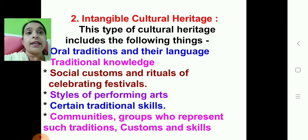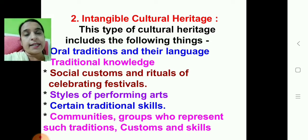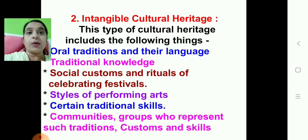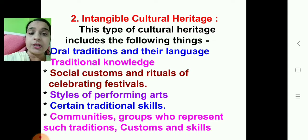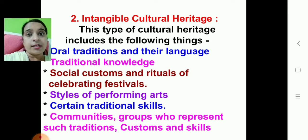Next is intangible cultural heritage. Cultural heritage is divided into two: tangible and intangible. Intangible means you cannot see or touch it. In the first lesson, we had learnt how we spread information — the transmission of information from generation to generation through oral sources of history.